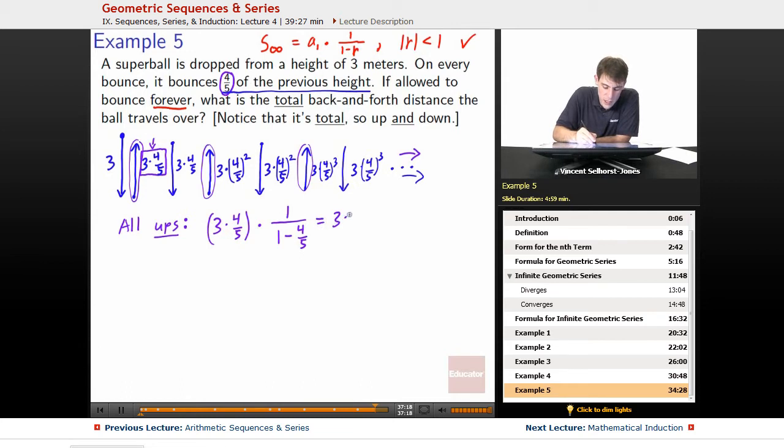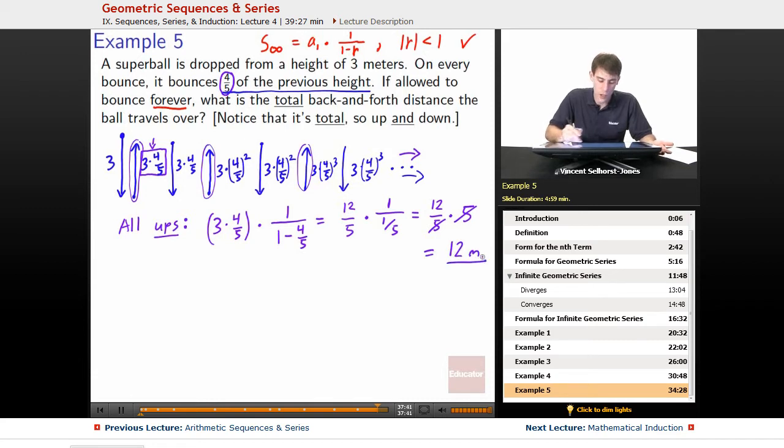Okay, keep going with this. So that's 3 times 4 fifths. Let's write it as 12 fifths. 12 fifths times 1 over 1 minus 4 fifths is 1 fifth. Well, 1 divided by 1 fifth is 12 over 5 times 5. So we've got 5 times 1 fifth on the bottom cancels out, so we've got 12 meters total of bouncing for our up values. So 12 meters total for our up values.